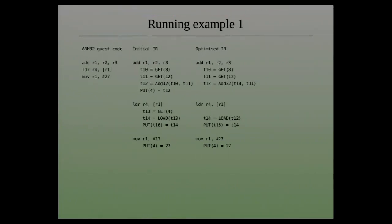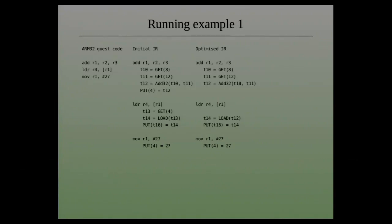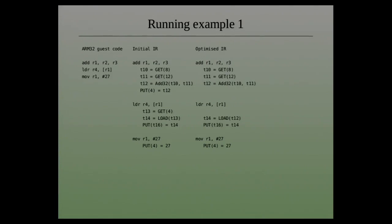This is the sequence we're taking. We're going to add two registers together — R2 and R3 — and produce a result in R1. Then we're going to load from memory at that address into another register, R4. And then we're going to override R1 with the constant 27. So the front end translates each instruction individually. For example, for this add instruction, we have three temporaries: T10, T11, and T12.